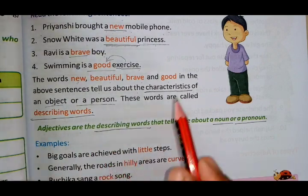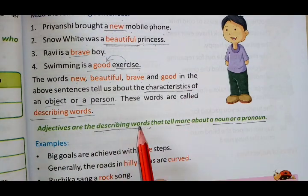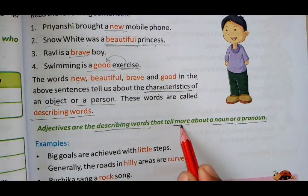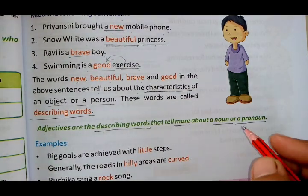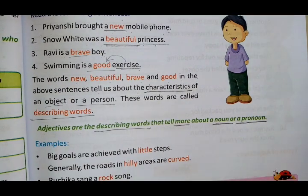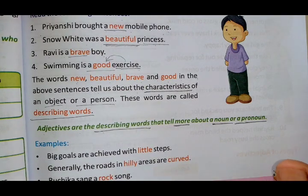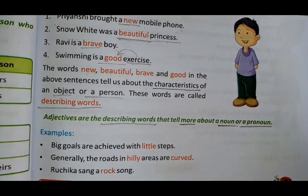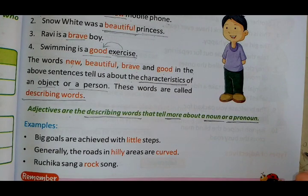Adjectives are describing words. They give us more information — about whom? About a noun or pronoun. Understood? Adjectives tell us something extra about a subject or an object. If we get additional information about any noun or pronoun, all those words are called adjectives.